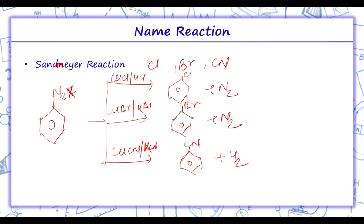This is the first name reaction, Sandmeyer reaction, in which nucleophiles Cl, Br and CN are introduced in the benzene diazonium chloride. Next is Gattermann reaction.